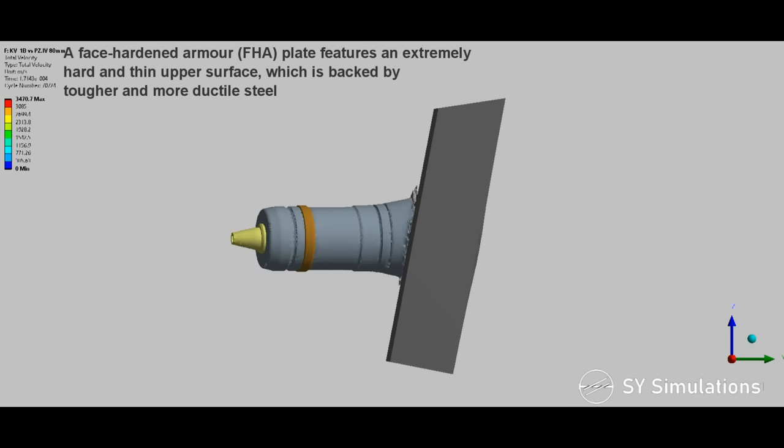A face-hardened armor plate features an extremely hard and thin upper surface, which is backed by tougher and more ductile steel.